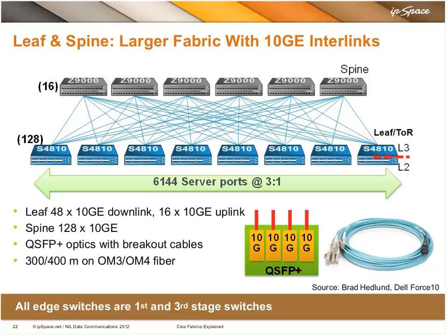Each parallel lane of 10 gig is going to be its own interface on the switch, available as an IP routed path for ECMP to make a hashing decision and place flows on any one of those four 10 gig lanes. When I have four QSFP optics plugged into the switch for the uplink, four times four equals 16 — so now there are 16 logical ports of 10 gig going to the spine layer.